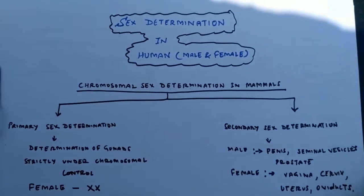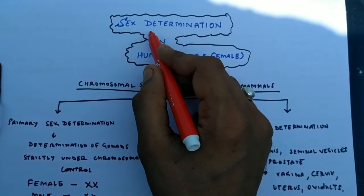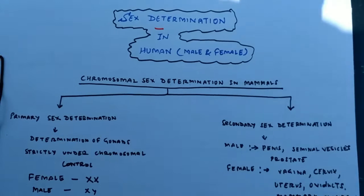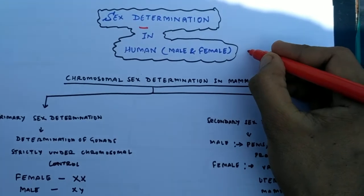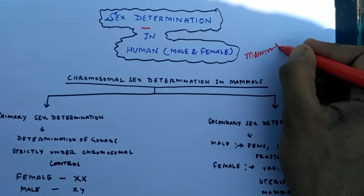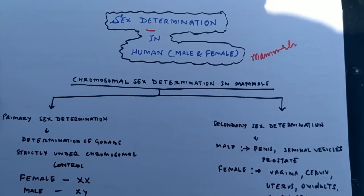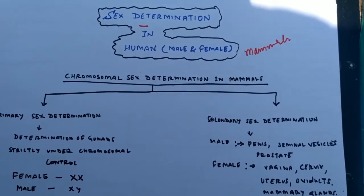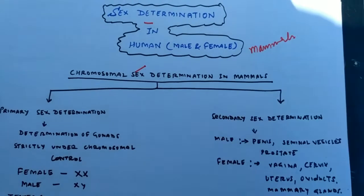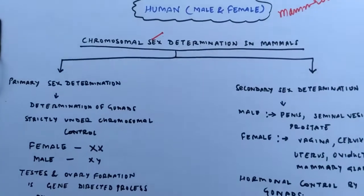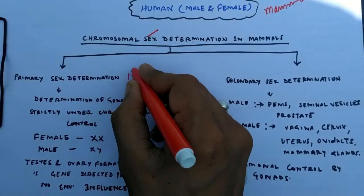Good morning to all of you, welcome back friends. Today I will discuss sex determination and differentiation in human male and female, which can also be regarded as sex determination in mammals. Sex determination is totally under the control of chromosomal effects — that is, under the effect of sex chromosomes and autosomal chromosomes.